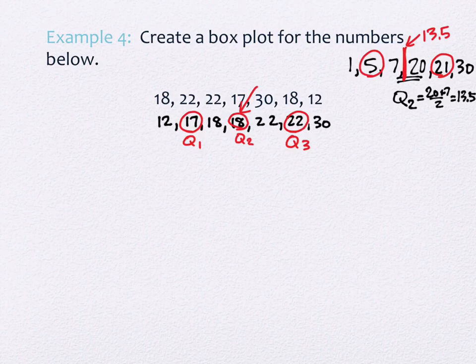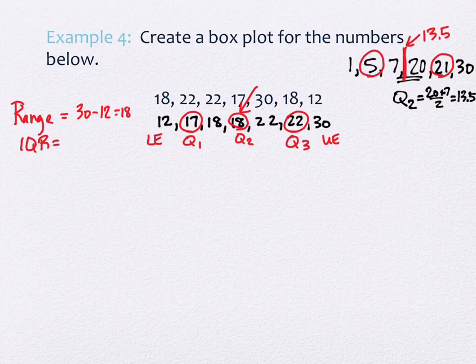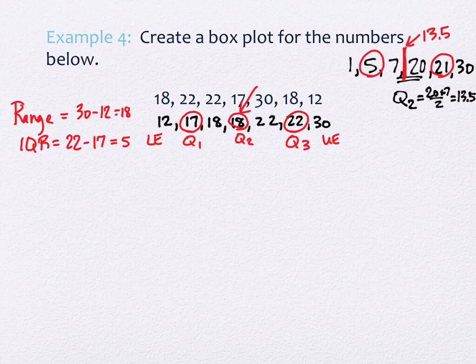So we found Q1 = 17, Q2 = 18, Q3 = 22. Lower extreme is 12, upper extreme is 30. The range would be 30 minus 12, which is 18. The interquartile range takes Q3 (22) minus Q1 (17), giving an IQR of 5.